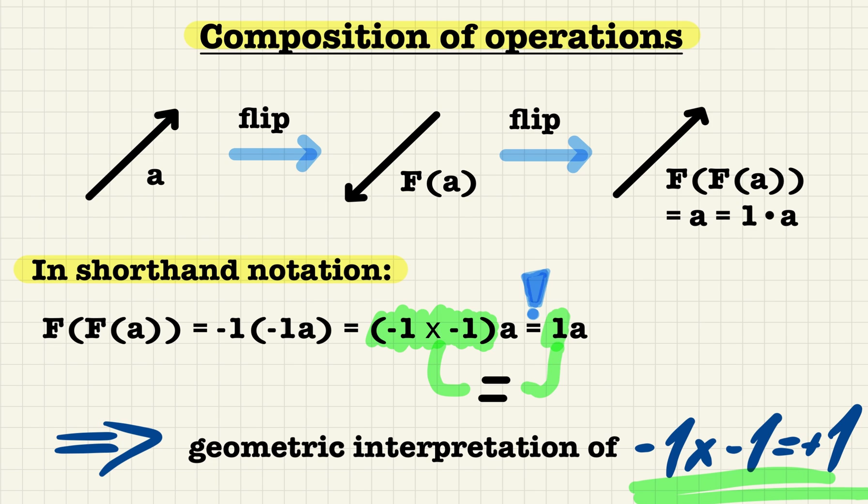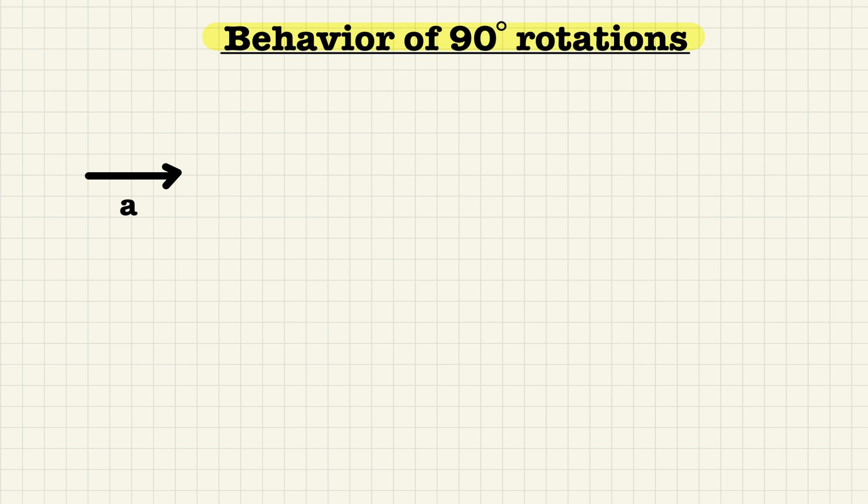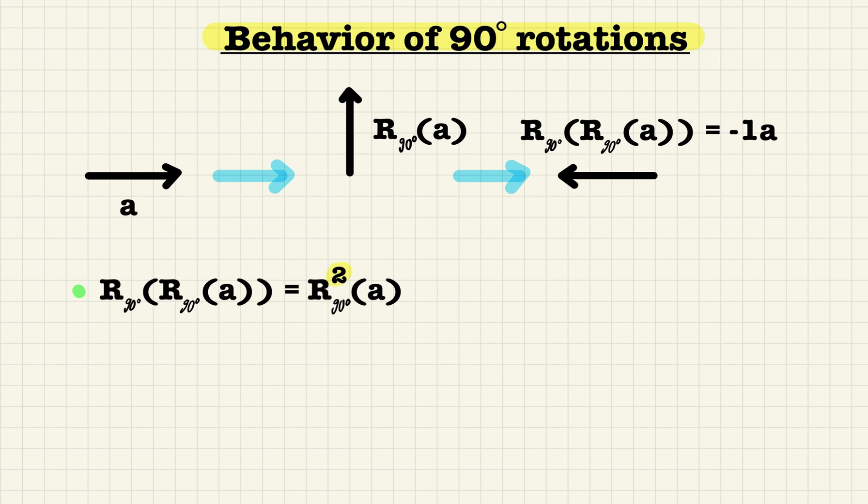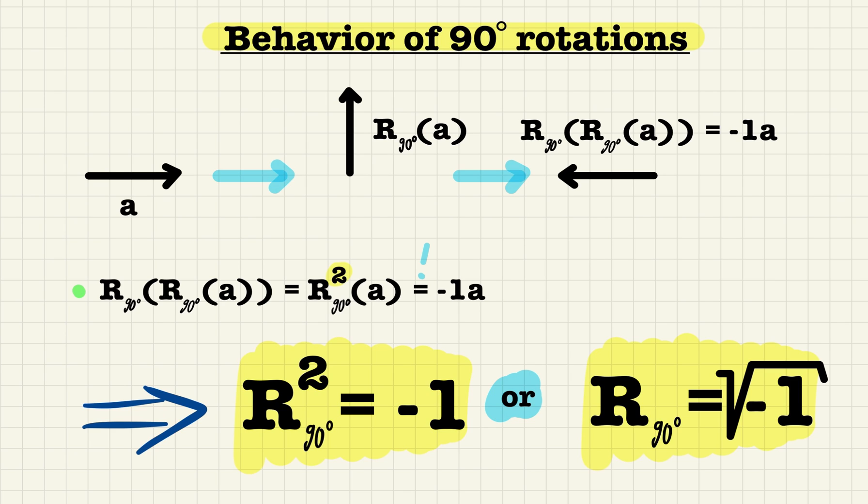So now that we have a common sense interpretation of the first symbol in e to the i pi equals minus 1, let's move on to the next. Wait! I don't see a symbol. What do you want with these 90 degree rotations anyway? Bear with me. Evidently, two 90 degree rotations have the same result as a flip. Oh no! We are not supposed to take the square root of negative numbers. Or are we?